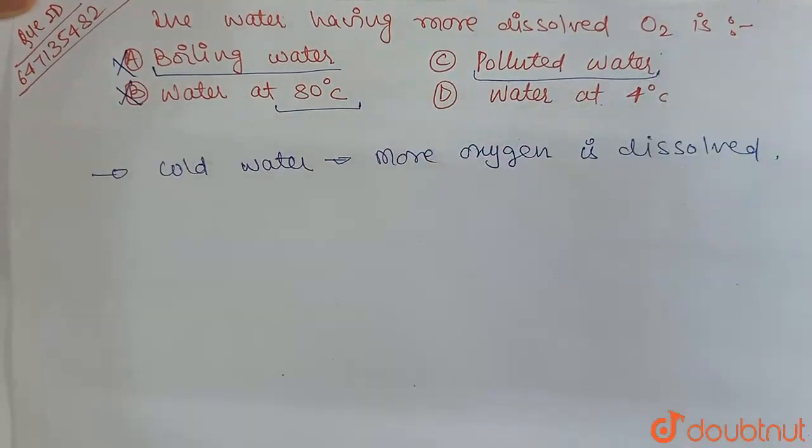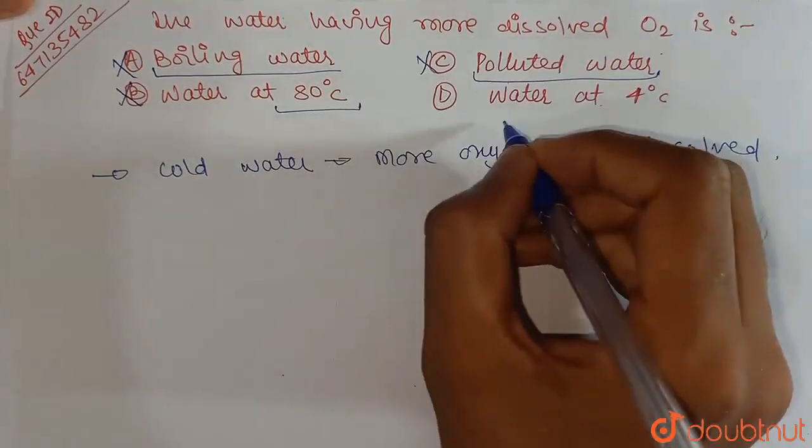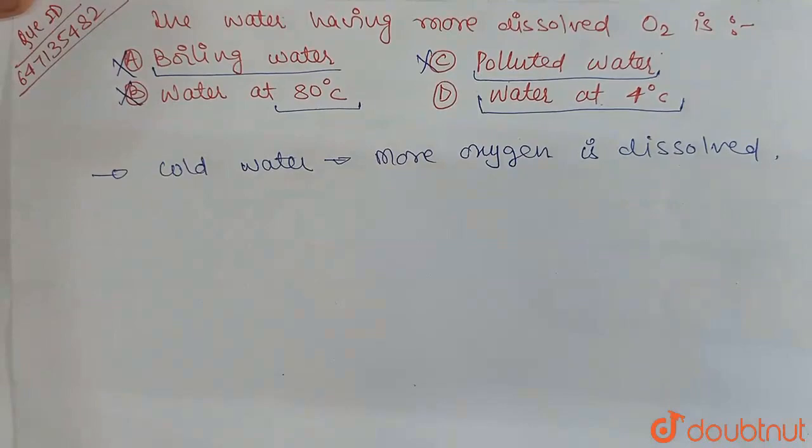C is polluted water. In polluted water, already oxygen is less. So basically, water at 4 degrees Celsius. That is cold water.